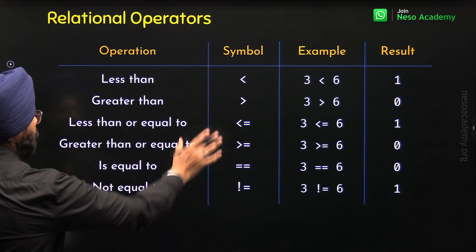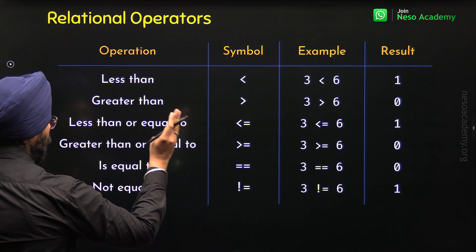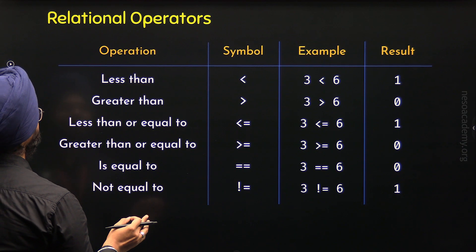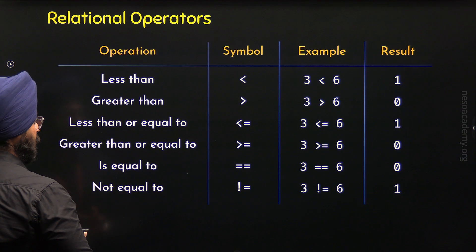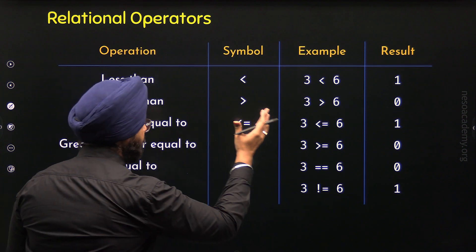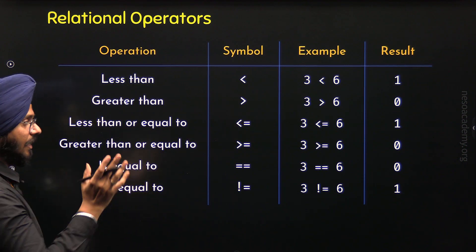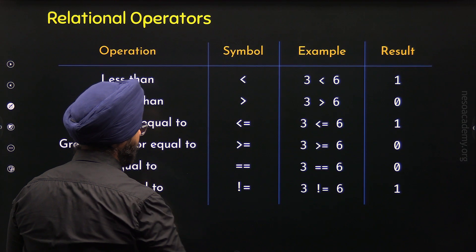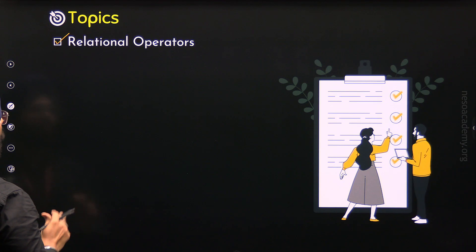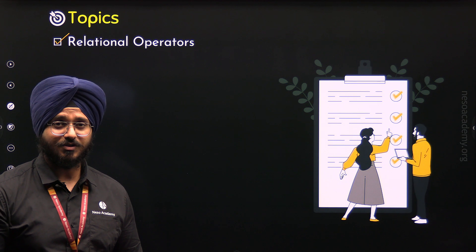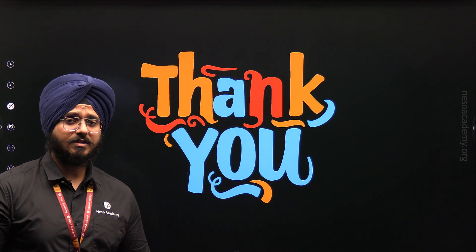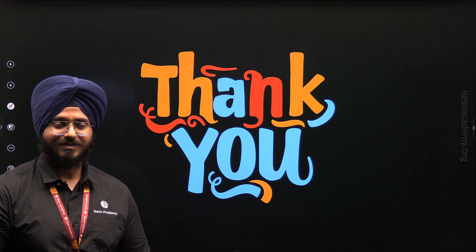These are all the relational operators we have in C++. We have understood what relational operators are, the different types available, and how they work through examples. With this we have completed the topic of relational operators and this lecture. Thank you for watching, and I will see you in the next one.